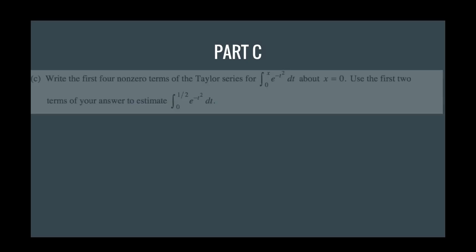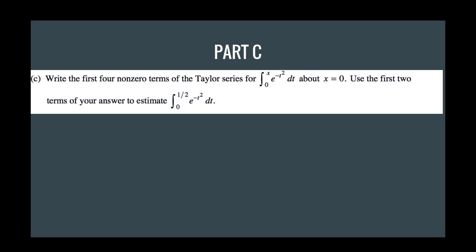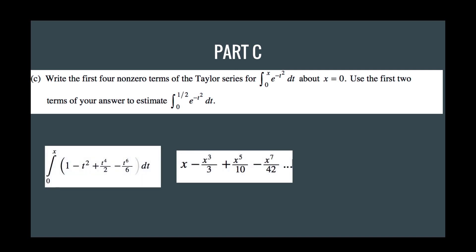Now let's go to part C. Part C is relatively easy. So we want to write the first four non-zero terms of the Taylor series of the integral from zero to x of what we found before, and then use the first two terms to estimate the value of zero to one half of e to negative t squared. So an easy way to do this is just to go ahead and use the values we found in the previous question, part A, and just plug that in, and then take the integral of that, and we get these four values.